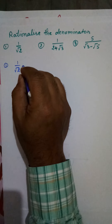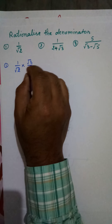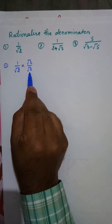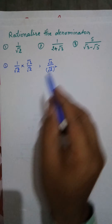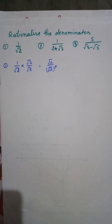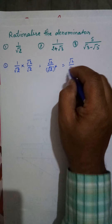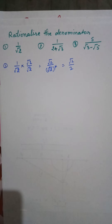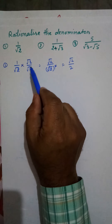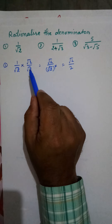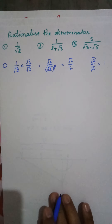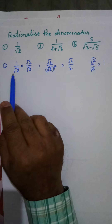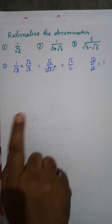For this process, we multiply by √2 over √2. In the denominator, √2 times √2 becomes √2 whole square, and by the law of exponents, the square root and square cancel each other, leaving a whole number in the denominator. This is called rationalization of the denominator. Note that multiplying by √2/√2 equals 1, so it does not change the value of the expression.